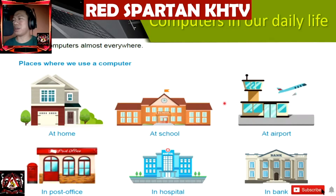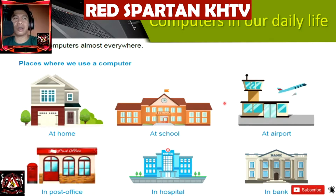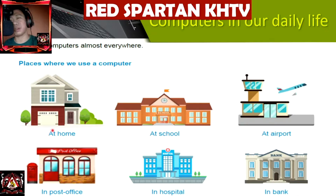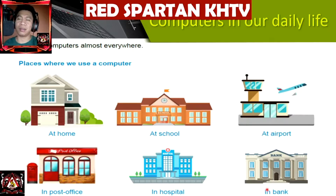Where do we usually see computers? In our daily life, we use computers almost everywhere. Examples of places where we use computers include: at home, at school, at the airport, in the post office, in hospitals, and in banks.